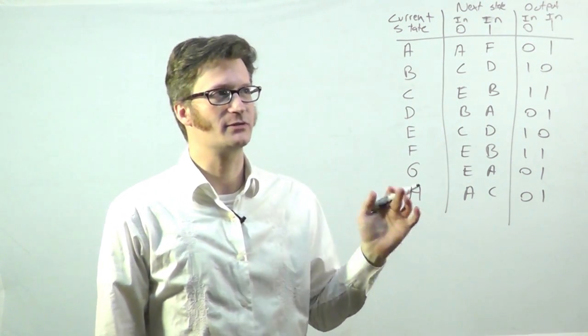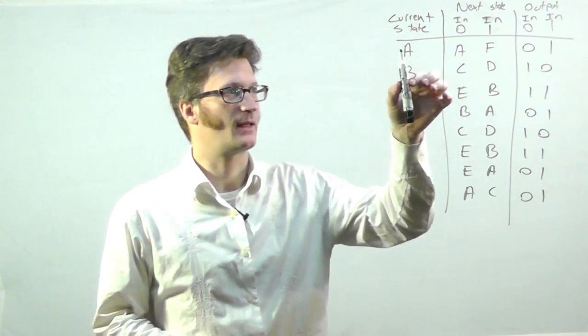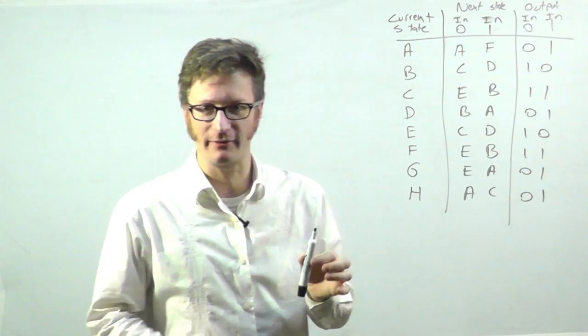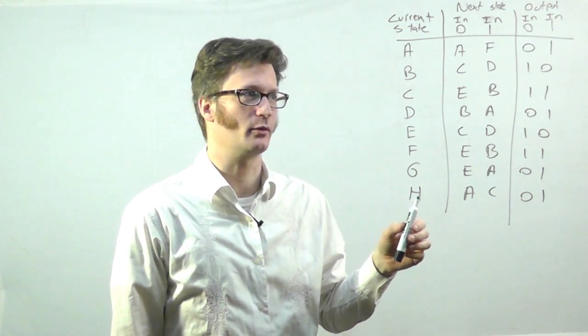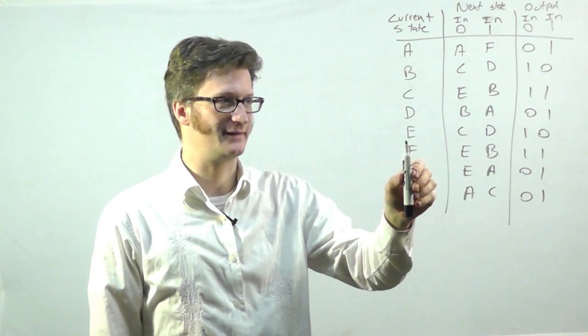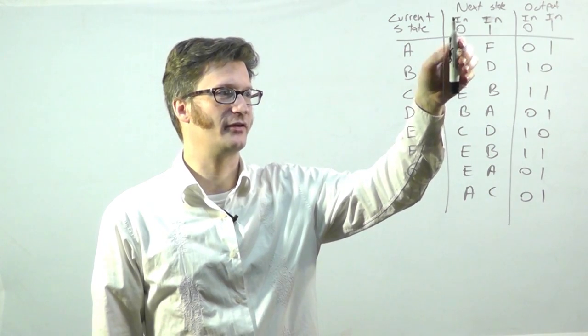So what I'm trying to do with state reduction is I'm looking at, I've drawn my state table in a little bit different way than I drew it before, if you've been following these videos in order. Previously I had my states, my current state, and then I'd have the input for zero,